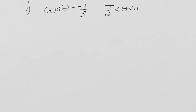Problem 7 is asking us to find the exact value of the remaining trig functions of theta when cosine of theta is negative one-third and theta is greater than pi over 2 and less than pi.